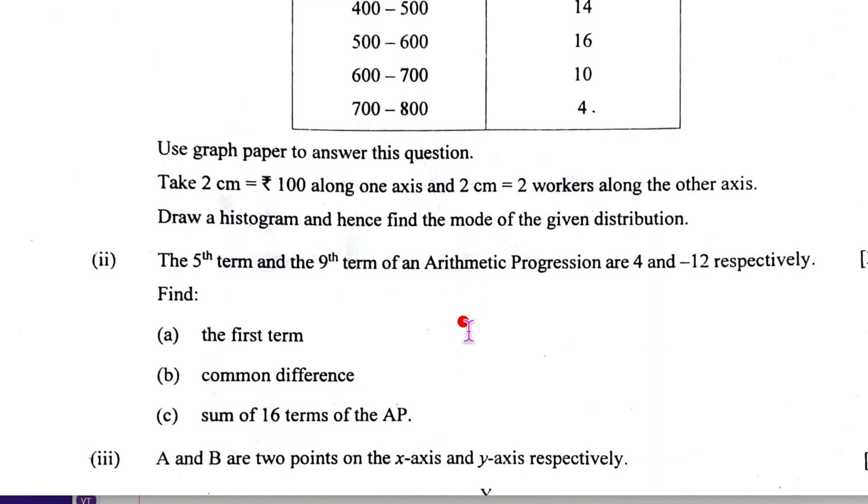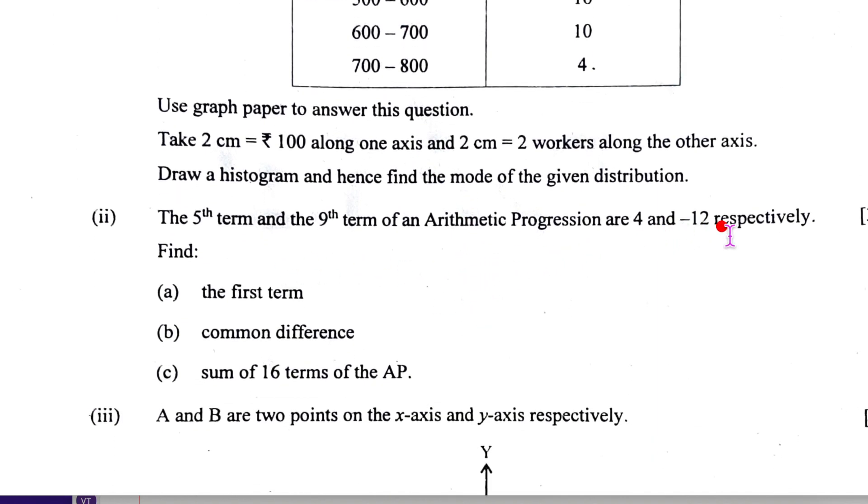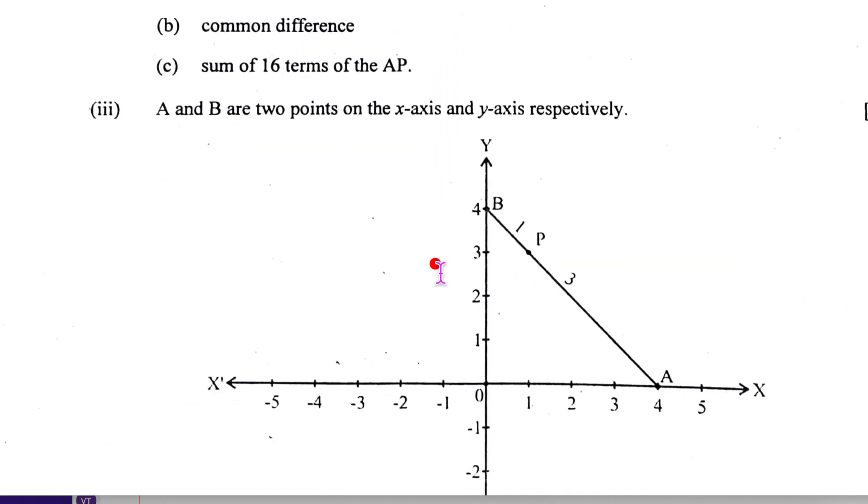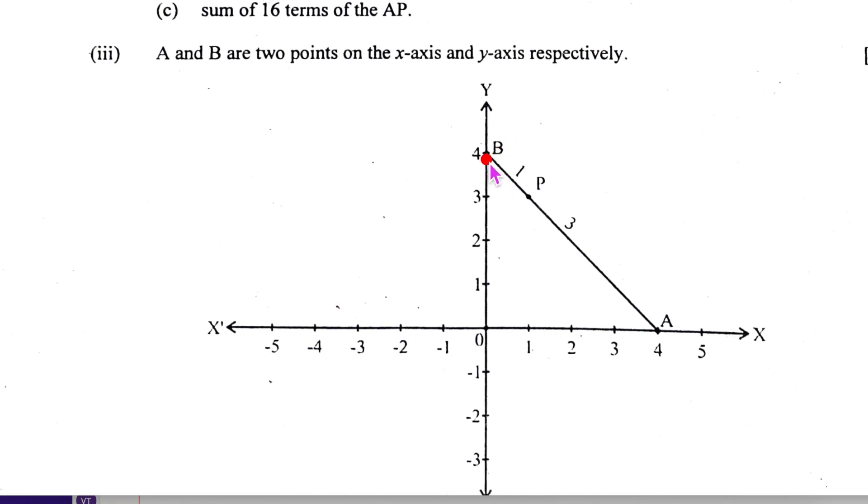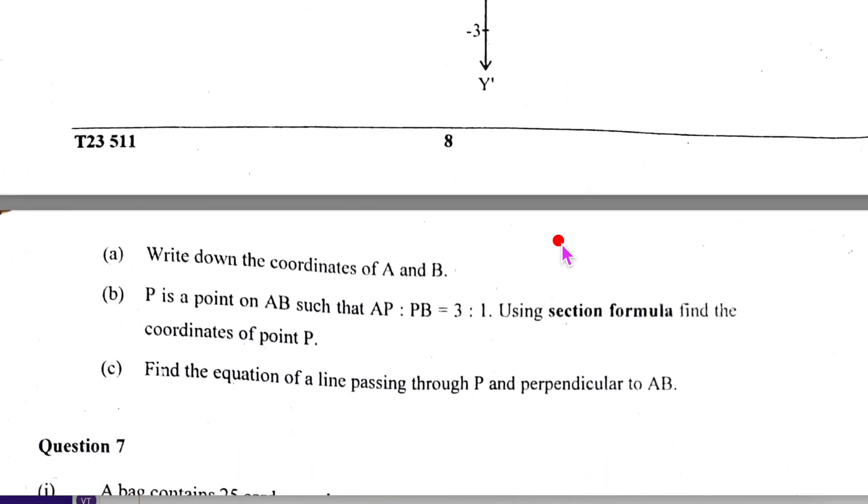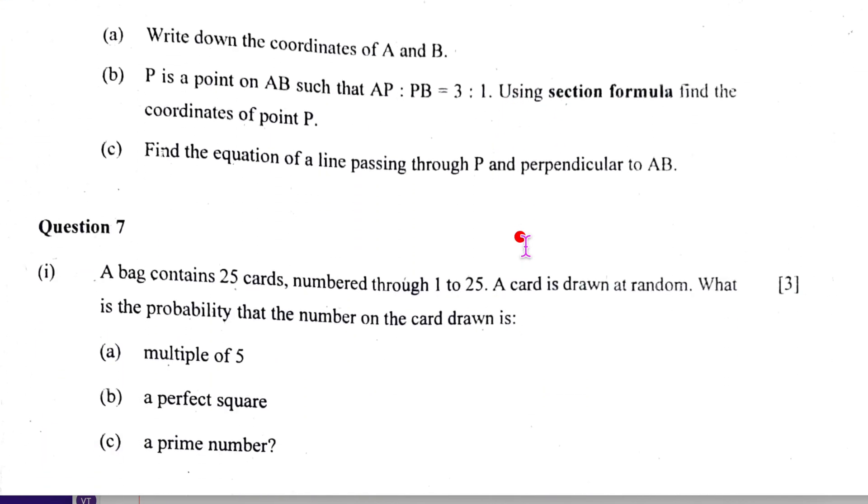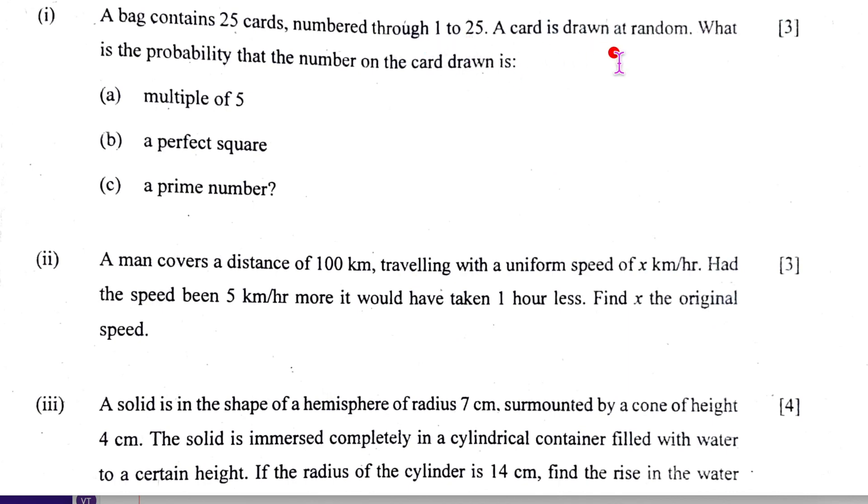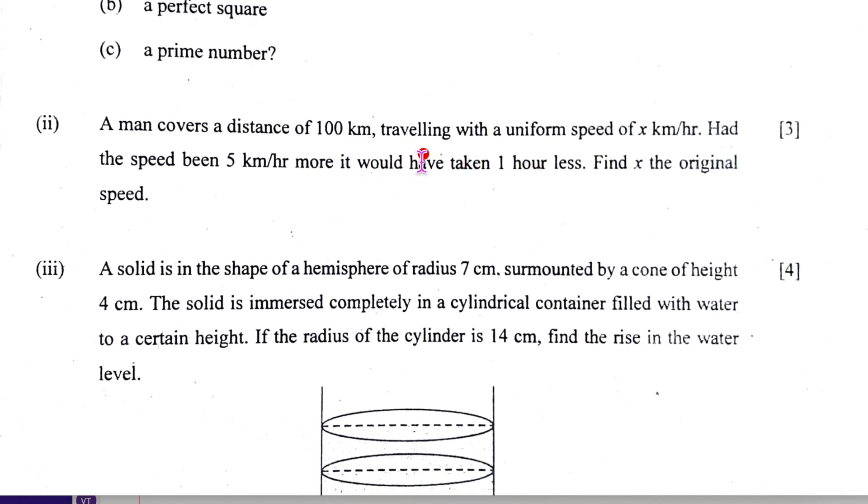This also - fifth term, nth term is this and this, so find the first term. You will get simultaneous equations with a and d. It is doable. This one also looks very simple. This one is 4, if I coordinate, so 0 comma 4 is B, A is 4 comma 0. You can find the slope also of this, you can find the point also because the ratio has been given. So that is doable, so this also is pretty simple. Let us look at this - probability seems to be simple. We know multiples of 5, perfect square, prime number, etc. Let us look at this - is quadratic equation, yeah. So you know the speed problems. This seems fairly simple, it is doable.